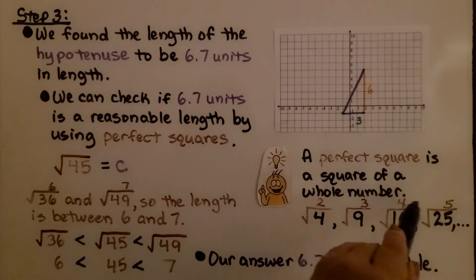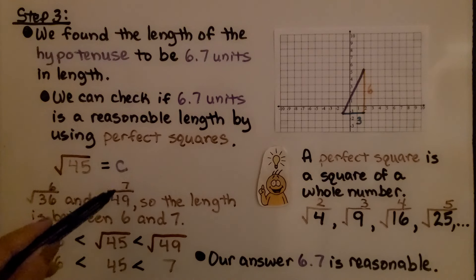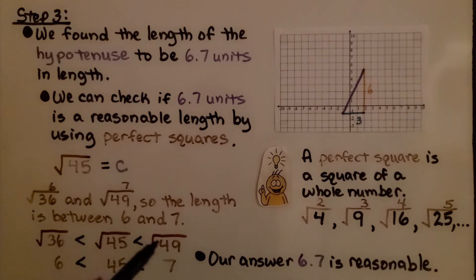For the square root of 45, it's between the square root of 36, which is 6, and the square root of 49, which is 7. 45 is in between 36 and 49. It's greater than 6 and less than 7. It's between 6 and 7. Our answer, 6.7, is reasonable.